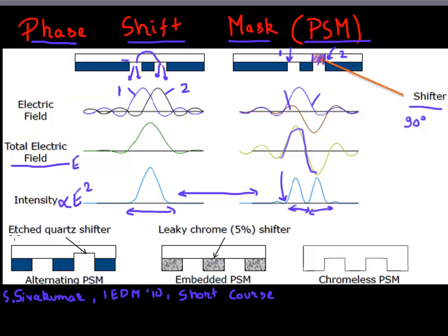There are multiple ways you can add this phase shift. If you're using a quartz mask, you can etch into it to reduce the optical path, or you can add chrome to cause the phase shift, or you can have different depths between two different features. These are the multiple ways you can introduce phase shift.